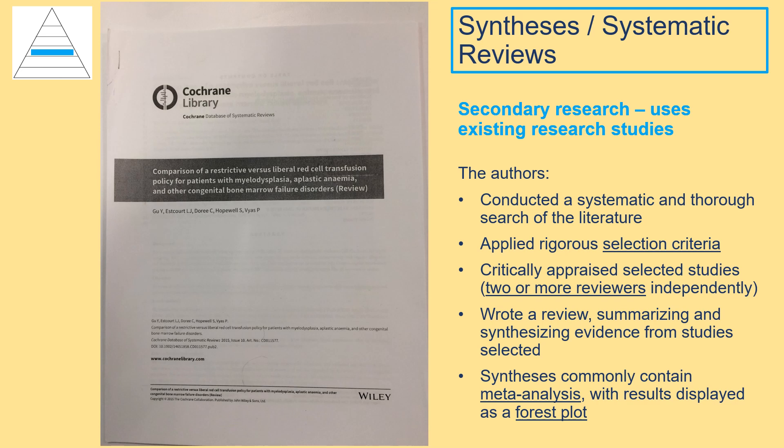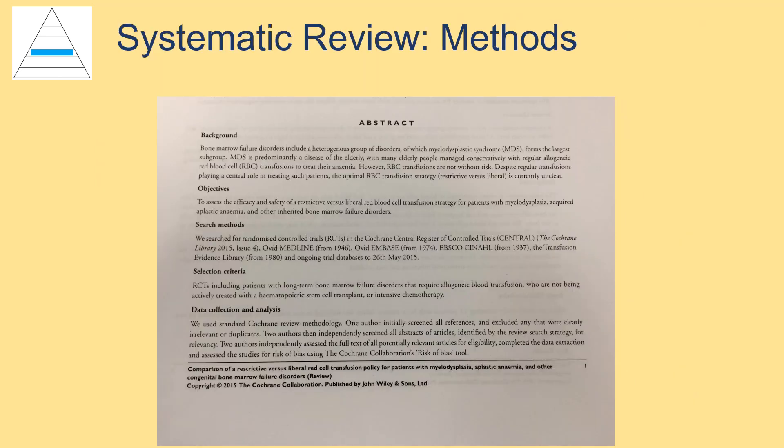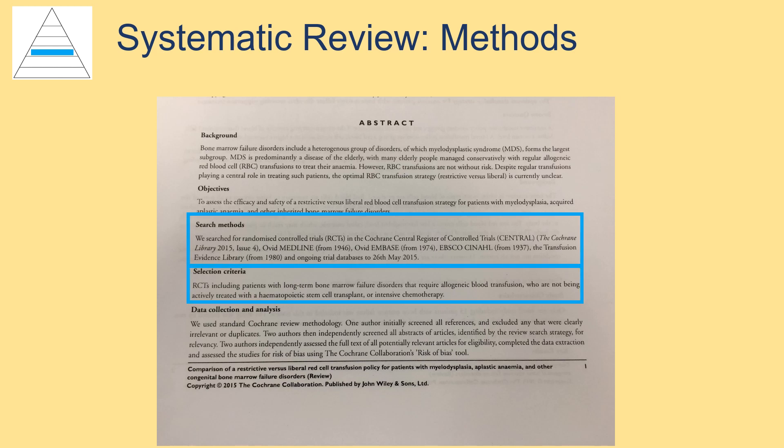Systematic reviews frequently contain meta-analysis, which is a statistical combining of data across the studies included in the review. The results will be displayed in the form of a forest plot. In this example, the methodology is broken down into several categories: a description of the search process that was followed, the selection criteria that determined what studies were included, and the data collection and analysis that describes how two authors independently screened abstracts and assessed the full text of articles.